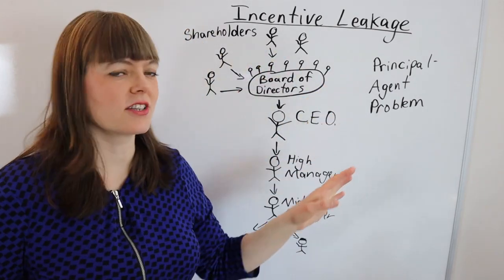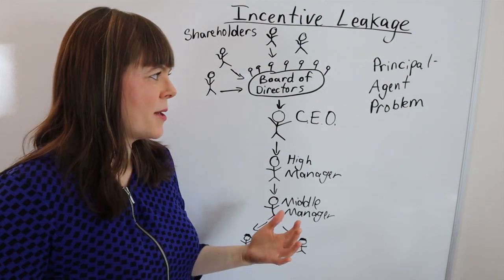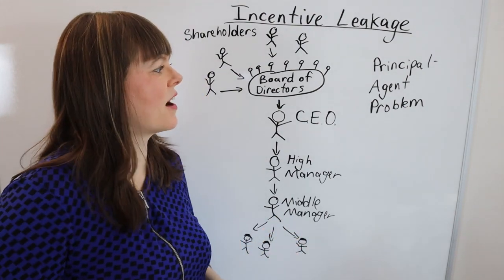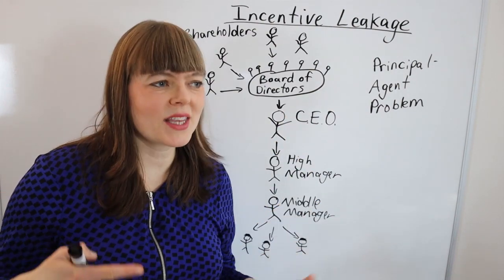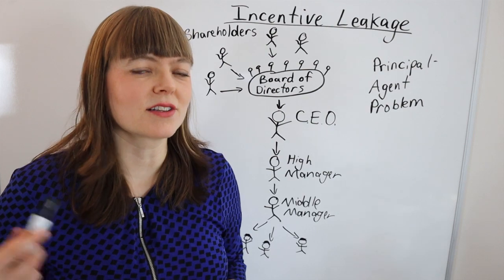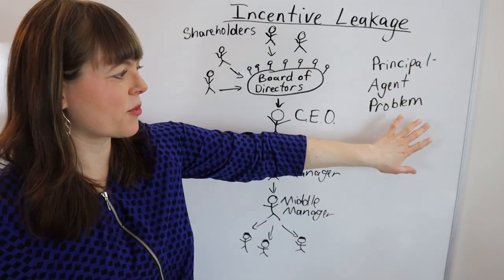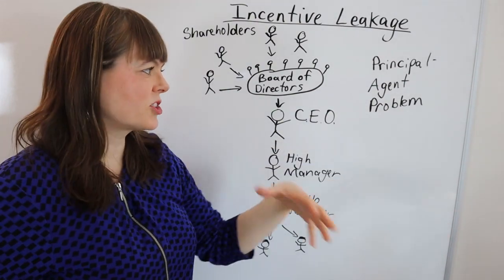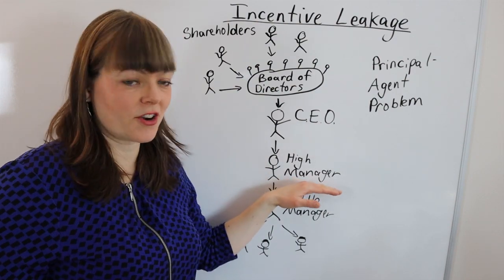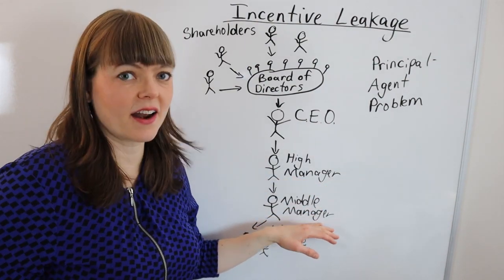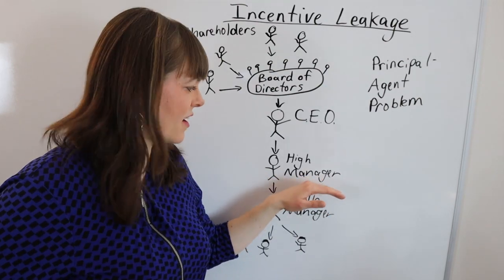I would like to talk about incentive leakage in the context of a company or a corporation, because this is a really interesting application of the principal-agent problem, where the principal-agent problem is actually a little bit more of a societal solution. So first let me explain how this works. The principal-agent problem is basically any time that one person or one group is trying to get another person to act out the values, will, and desires of the principal.